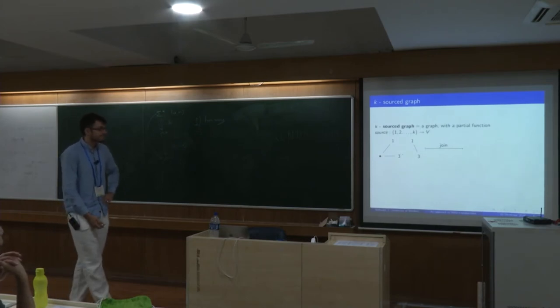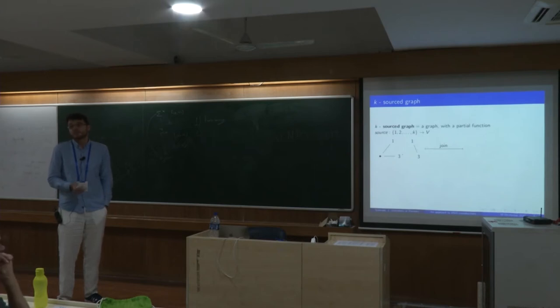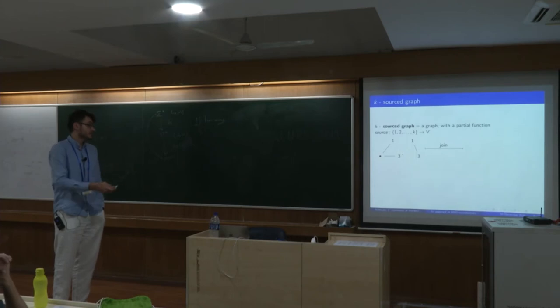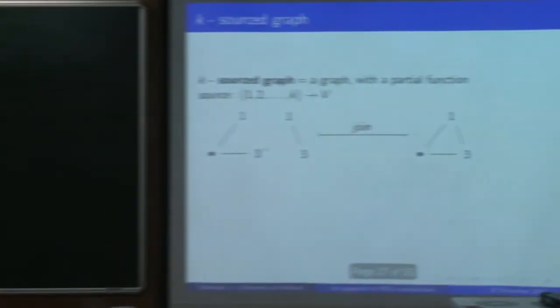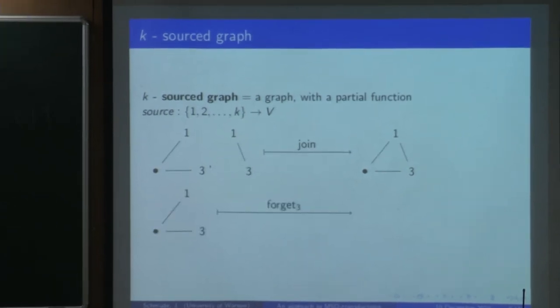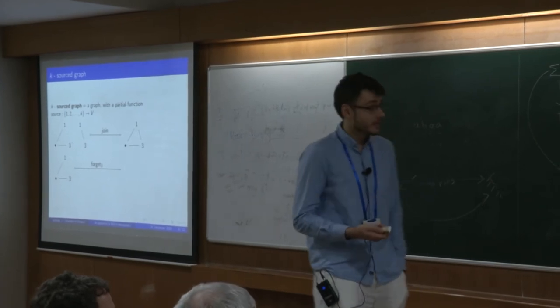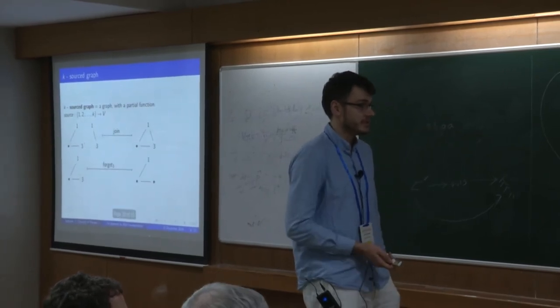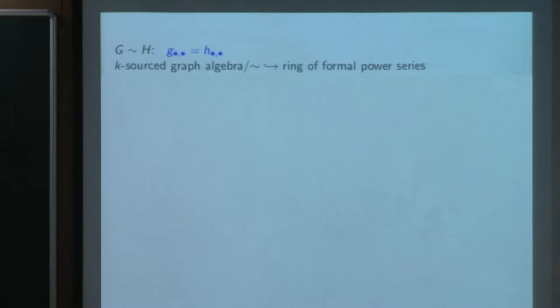Let's also say a little bit about what is a sourced graph. It's just a graph but some vertices are given names, and there can be at most one vertex with each name. In this case there's a one, there's a three, there is no two. We define two operations. One is called join, which essentially glues two graphs along the vertices that have the same names. And the forget operation, which takes away the name from a vertex and it becomes unnamed.